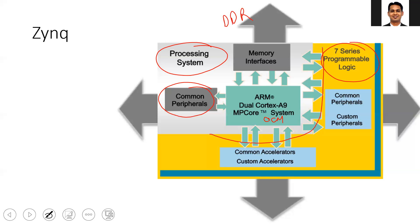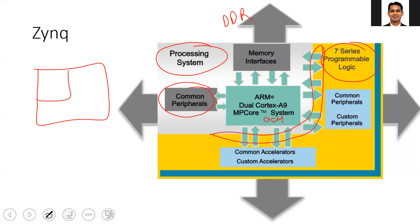We have discussed the basics of the AXI interface and the types of the AXI interface, and in the coming lectures we will discuss more details about this AXI interface in the Zynq SOC. The main objective of this lab is to have something in the FPGA as well as in the PS, establish communication between both via AXI interface, and using the ILA understand the different aspects of the AXI transaction.